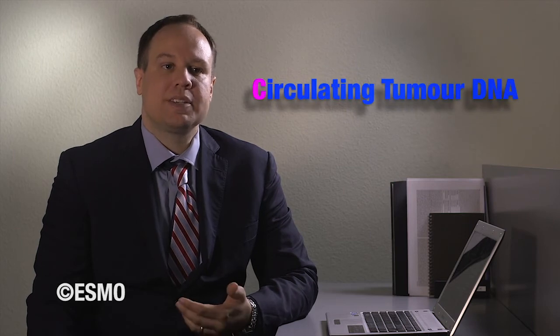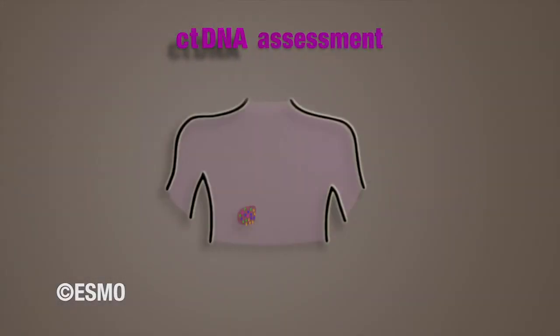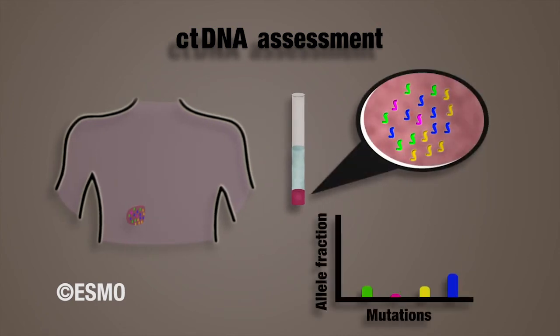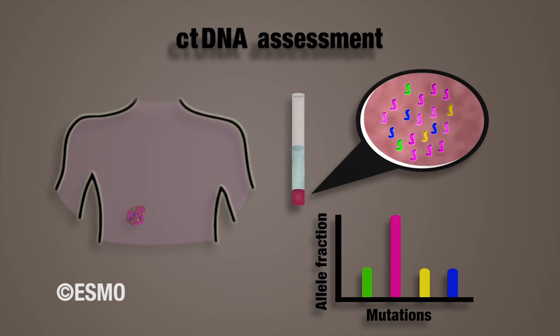Circulating tumour DNA, or ctDNA, assessment is a non-invasive method of sequencing fragments of tumour DNA shed into the bloodstream. Changes in ctDNA levels may reflect response to treatment or disease progression. Increasing representation of specific mutant alleles in the circulation, which may have only been present at a minor frequency in the primary tumour, may reflect clonal evolution and suggest new treatments to overcome resistance.